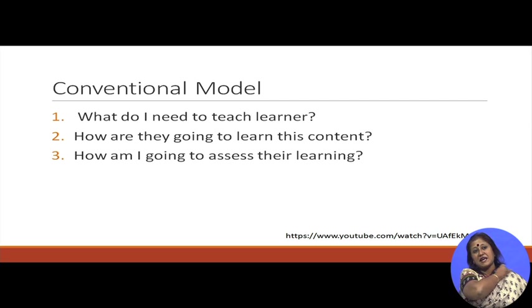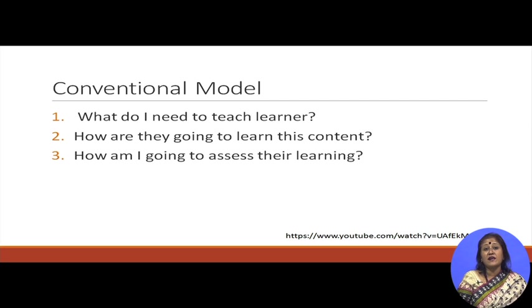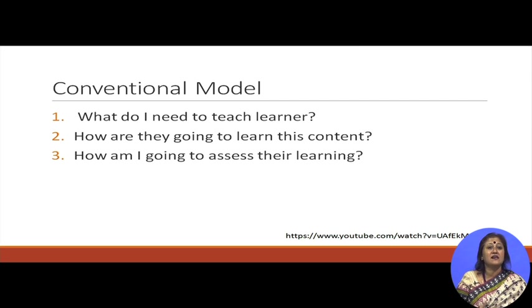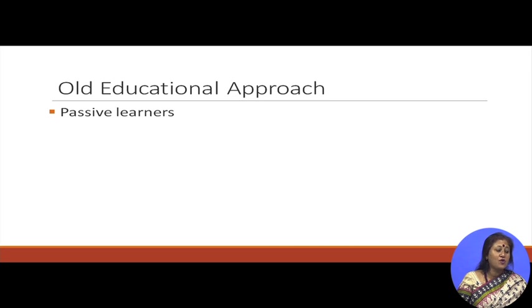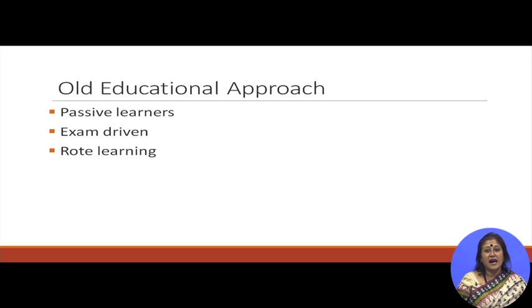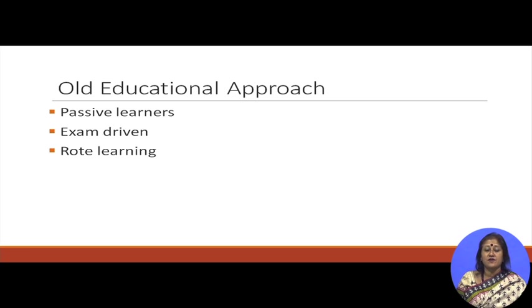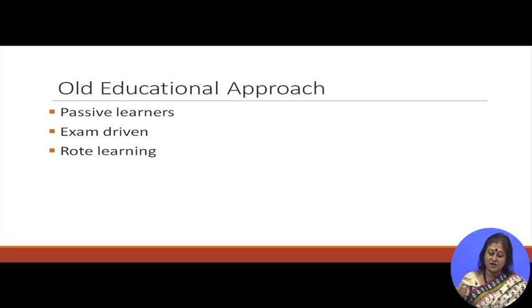The conventional model mainly asks three questions: what do I need to teach the learner, how are they going to learn this concept, and how am I going to assess that they are learning? Here the main component is the content — what the content is — and after that the learning. In the old educational approach, learners are passive learners; whatever the teachers are teaching, the learners are listening. It is mainly exam driven, and teachers follow a textbook. The main importance is to cover the textbook, so it is breadth but not the depth of the topic.